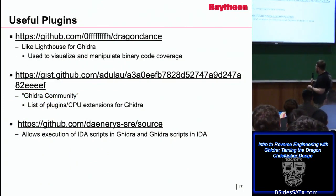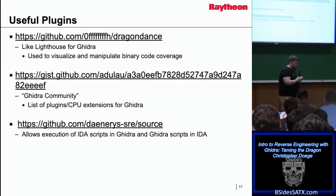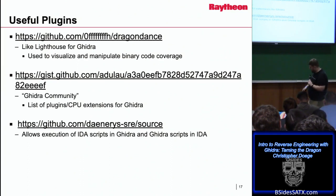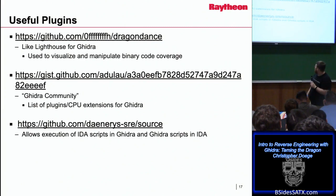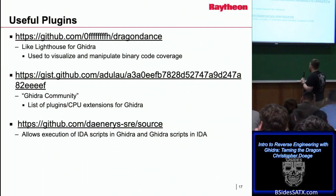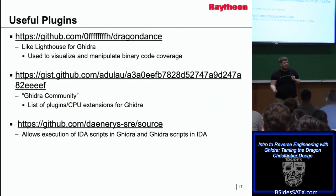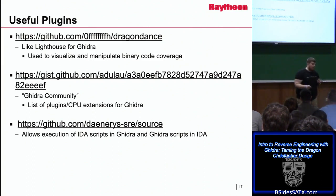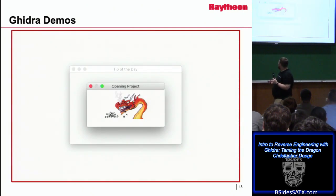For useful plugins: Dragon Dance is similar to Lighthouse for Ghidra and visualizes code coverage. Lighthouse is written by Marcus. There's also the Ghidra community gist listing plugins and CPU extensions. Then there's Denarius, which converts IDA Python scripts to run in Ghidra and Ghidra scripts to run in IDA — really useful for people who have IDA scripts they care about. Now it's demo time.